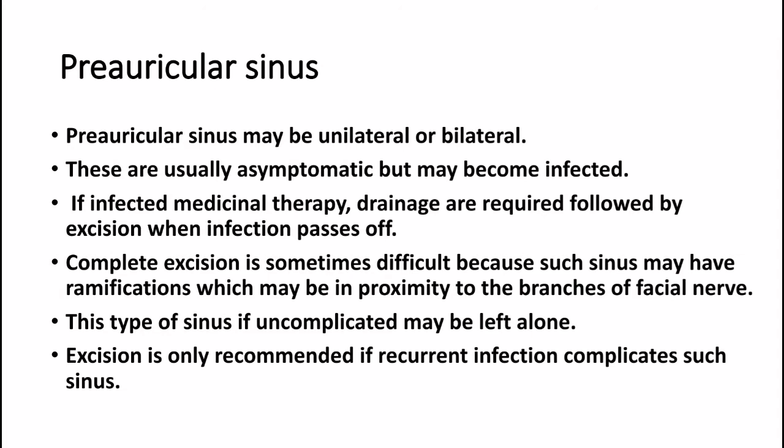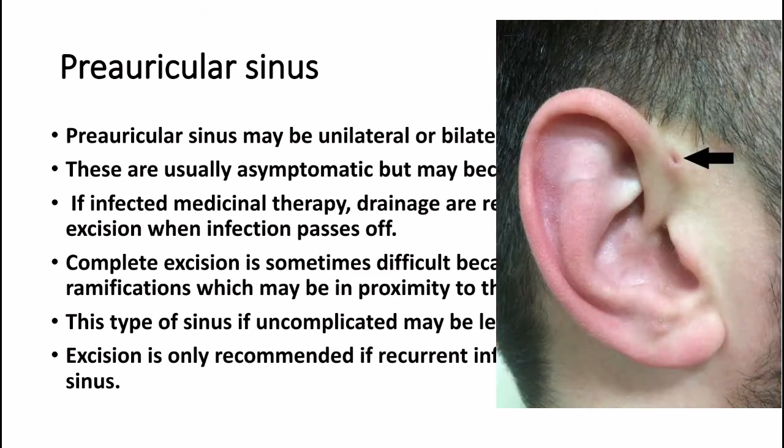Preauricular sinus may be unilateral or bilateral. These are usually asymptomatic but may become infected. If infected, medical therapy and drainage are required, followed by excision when the infection passes off. Complete excision is sometimes difficult because such sinuses may have ramifications in proximity to branches of the facial nerve. If uncomplicated, this type of sinus may be left alone. Excision is only recommended if recurrent infection complicates the sinus.